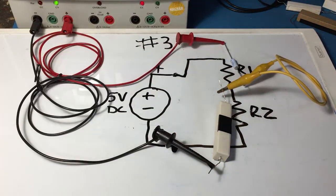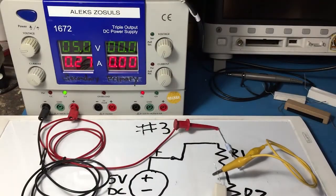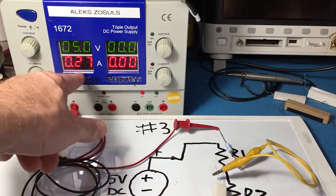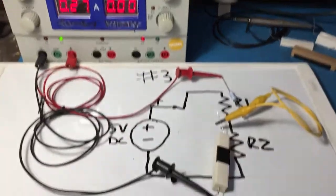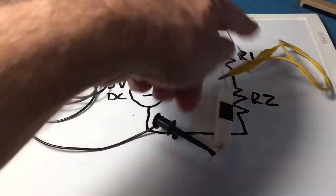And if we look at our power supply we're still at 5 volts and we're going to have our 0.27 amps of current. So there's 0.27 amps of current going through this loop right here.